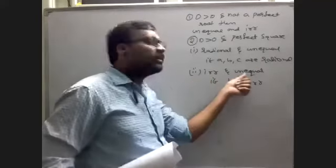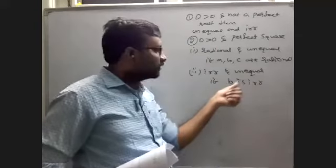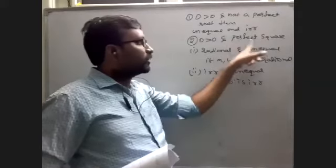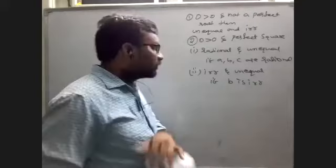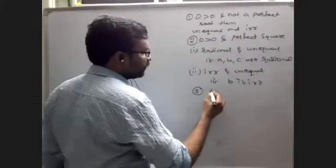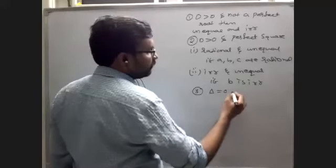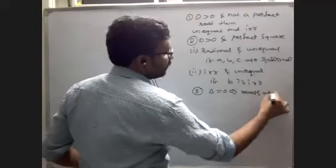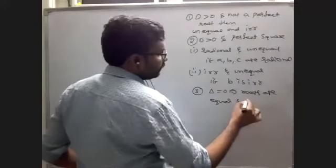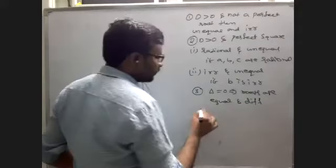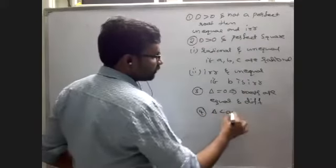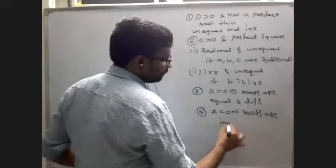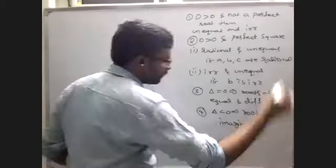Next, irrational and unequal — when b is irrational — for the nature delta greater than 0 and perfect square. Third, if delta is equal to 0, roots are equal. Fourth, if delta is less than 0, roots are imaginary.